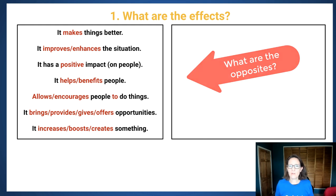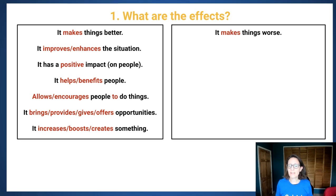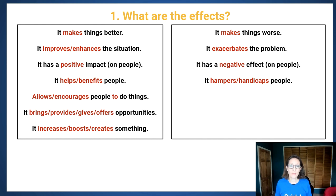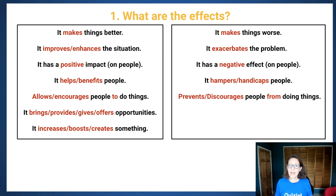Pause the video — think about what is the opposite of each of those terms. The opposite of 'it makes things better' is 'it makes things worse.' The opposite of 'improves' is 'exacerbates' — it has a negative effect. 'It helps or benefits people' — you could say it hampers or handicaps people or things. The opposite of 'allows' is it actually prevents or discourages people from doing things.